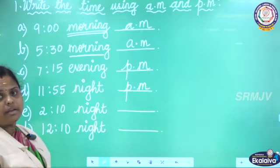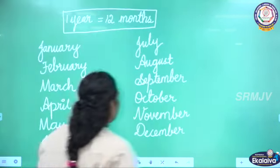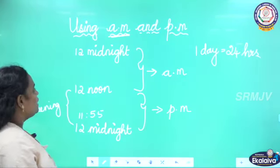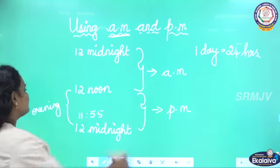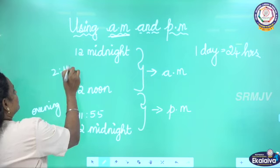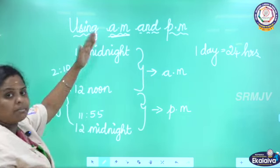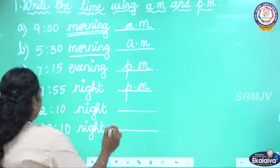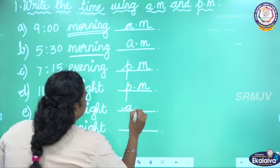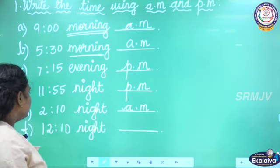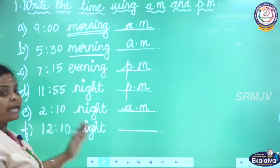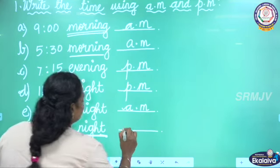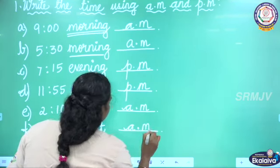Next, 2:10 at night. After 12 o'clock midnight, 2 o'clock comes in the first part, so 2:10 night is AM. Next, 12:10 night — after 12 o'clock midnight, so that is also AM.